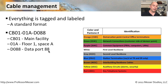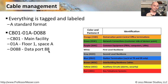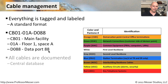But if you see that particular number, or somebody writes down 'I need you to check the cable CB01-01A-D088,' you know exactly what cable that is, and you know that cable can't be anywhere else in your organization. That's a very good way to label and identify exactly what that cable is.